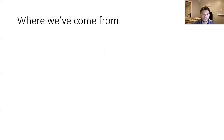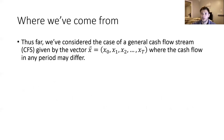Before we get into this, I just wanted to iterate a few prerequisites about where we've come. So far, we've thought about this general case of a cash flow stream, described by this vector X with a little arrow over it, which represents a series of different payments coming in periods 0, 1, 2, so on and so forth out to period T. We're considering a general case where these payments may be different, hence the subscripts on each time period allowing for those X values to be different.